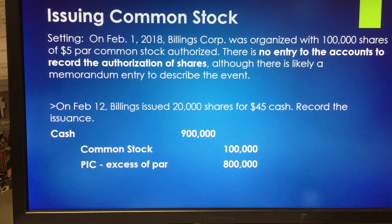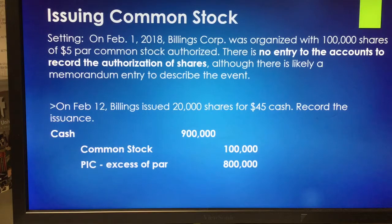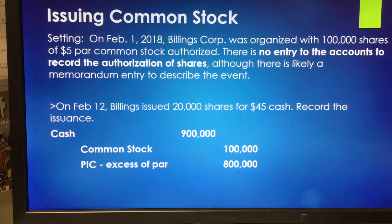On February 12th, Billings issued 20,000 shares for $45 each in cash — so $900,000. Debit cash $900,000 for the cash coming in. We credit the common stock account for the par value: $5 times 20,000 gives us $100,000 credited to common stock. And paid-in capital in excess of par is credited for the difference — that PIC excess of par is a plug figure.